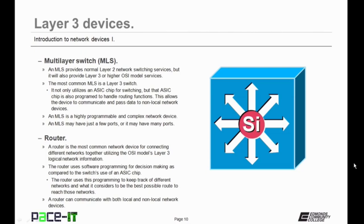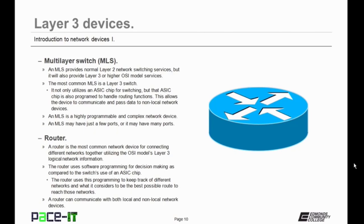Multi-layer switches are not very common in the small office or home office network because they're really expensive. You're more likely to find them in an enterprise local area network. Now let's move on to the router. A router is the most common network device for connecting different networks together, utilizing the OSI model's Layer 3 logical network information.